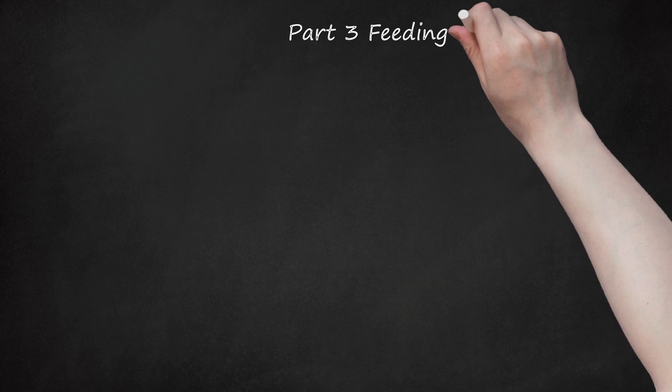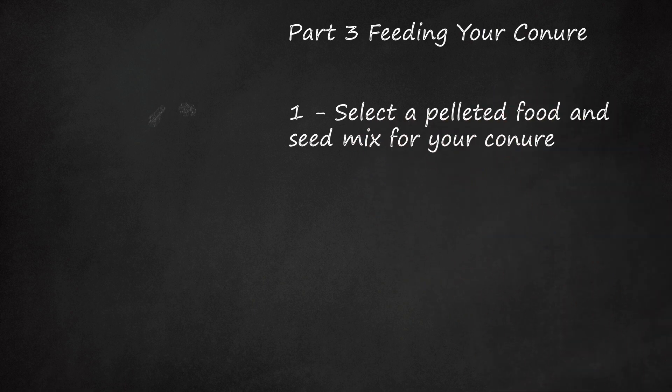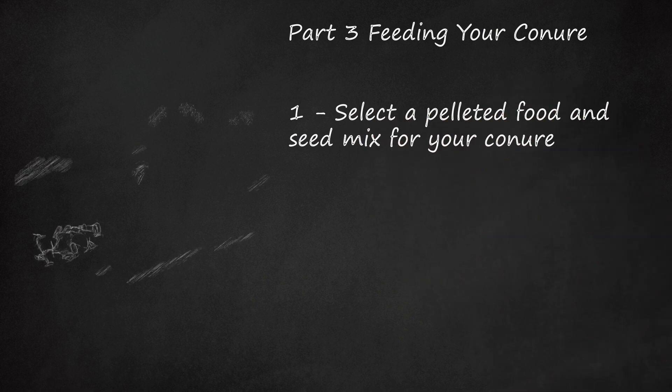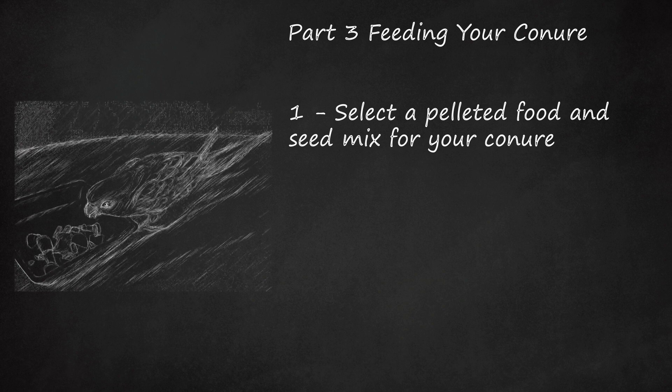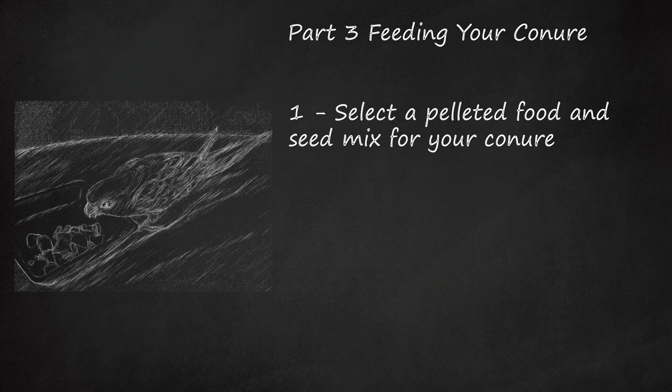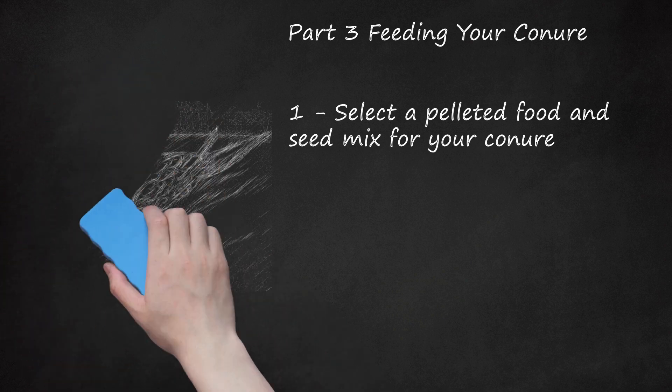Part 3: Feeding Your Conure. Select a pelleted food and seed mix for your conure. Pelleted bird food is commercially available at your local pet store. Pellets should make up approximately 60-70% of your conure's diet. They can come in different colors, which adds a little variety to an otherwise uninteresting food. Pelleted bird food, along with seed mixes, provide a good, nutritious diet. Some commercial seed mixes have fillers or harmful additives. Ask an avian veterinarian or the staff at your local pet store if you are unsure about which pelleted food and seed mix would be best for your conure, or select a seed mix that is labeled as organic or all-natural.